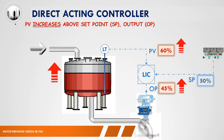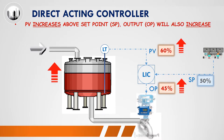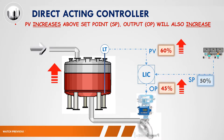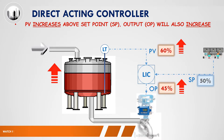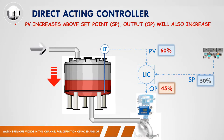Thus, for a direct acting controller, when the current process variable or PV increases above the set point or SP, the output or OP will also increase. With the larger opening of the control valve, the tank level will reduce back to the set point.